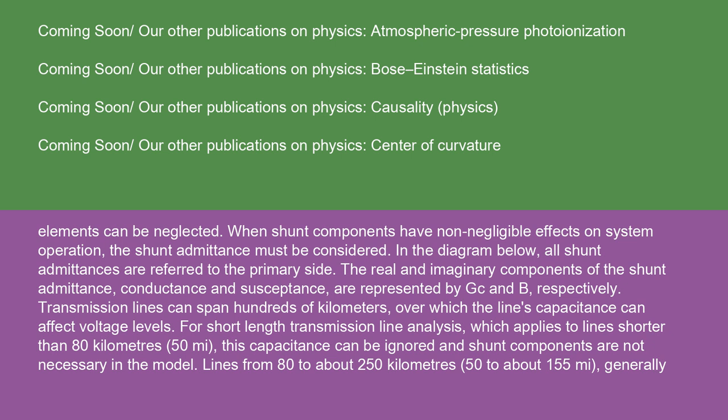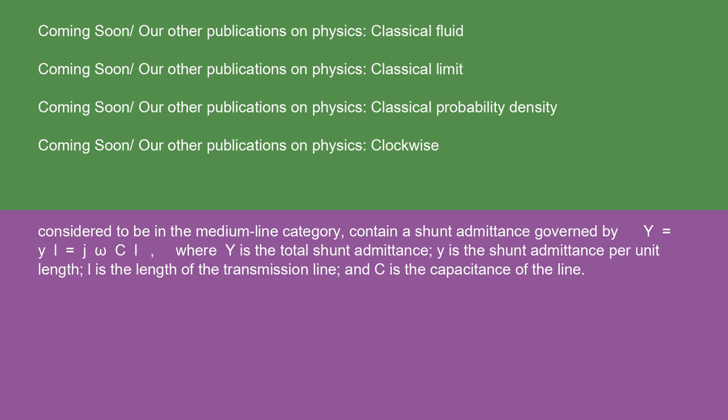Lines from 80 to about 250 kilometers (50 to about 155 miles) are generally considered to be in the medium line category and contain a shunt admittance governed by Y = yL = jωCL, where Y is the total shunt admittance, y is the shunt admittance per unit length, L is the length of the transmission line, and C is the capacitance of the line.